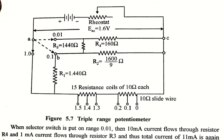In this lecture we have studied two multi-range potentiometers. The first one is the two-range potentiometer and the second one is the triple range potentiometer. In the next lecture we will study the Vernier potentiometer as a part of DC potentiometers.